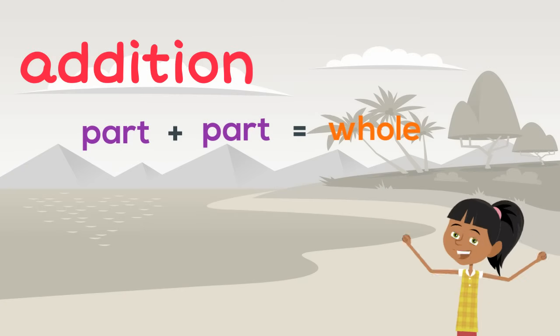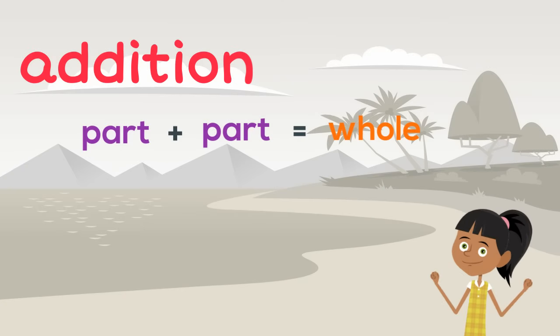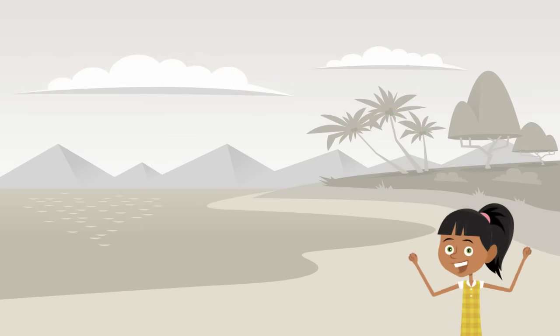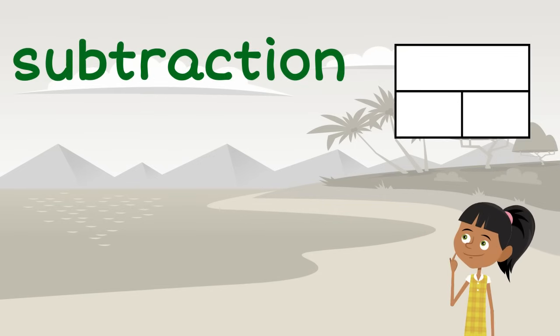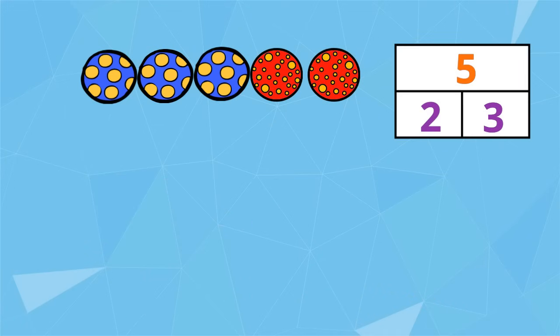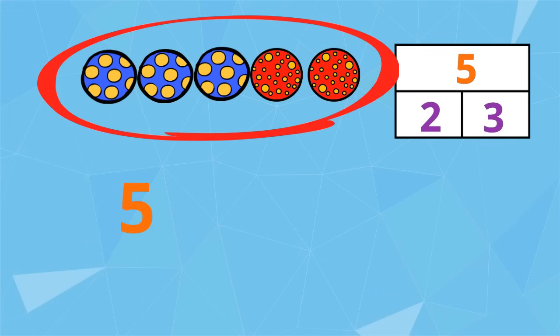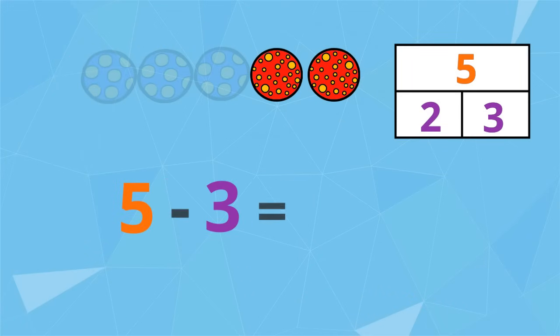So, we know that part plus part equals the whole. We can also use this part-part-whole model to represent subtraction. If our whole is 5 and we take away the part 3, we are left with the other part, 2. 5 take away 3 equals 2. The whole take away one part equals the other part.